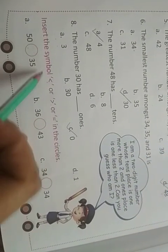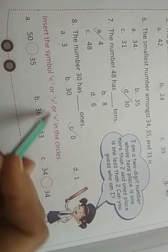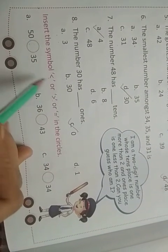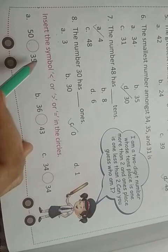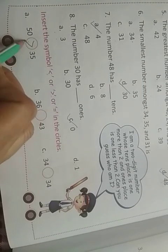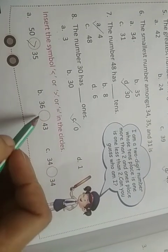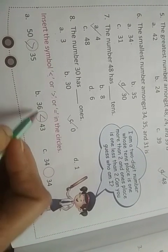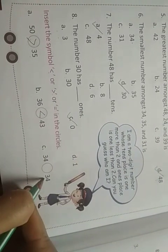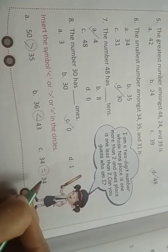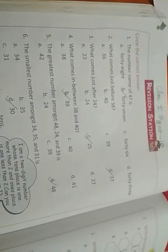Insert the symbol greater than, less than, or is equal to in the circles. इसमें आपको बताना है कौन सा greater का है, कौन सा less than का है। 50 और 35, तो 50 is greater than 35. 36 और 43, 43 is greater than 36. 34 और 34 is equal to 34, दोनों बराबर है। यह आपका homework है, neat and clean handwriting में आप अपना homework copy में कर लीजिएगा। Thank you.